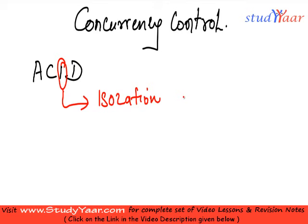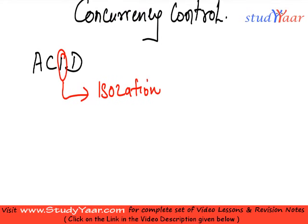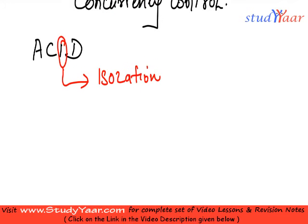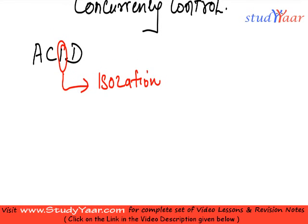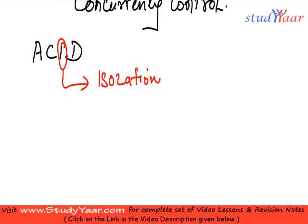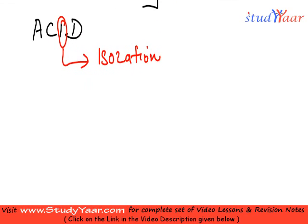Isolation basically tells me that my transactions should be executed in such a manner that they seem as if they were executed in a serial manner, so that I do not have some negative effects on the database or end up in a non-consistent state.